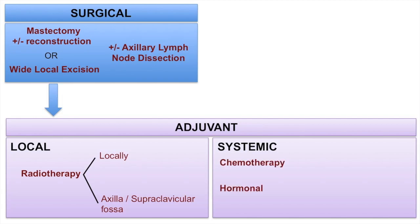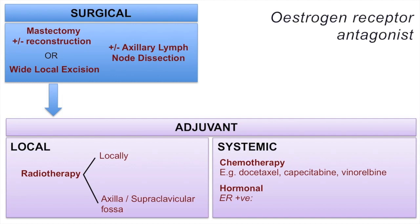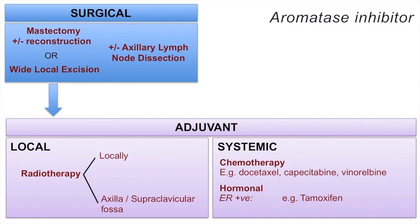Systemically, there are hormonal and chemotherapy treatments. Examples of chemotherapeutic agents include docetaxel, capecitabine, and vinorelbine. Hormonal therapy depends on the receptor status of the cancer. Oestrogen receptor-positive patients may benefit from blocking activation of this receptor, which may otherwise contribute to progression of the cancer. We can try to block this receptor by giving an antagonist such as tamoxifen, or we could reduce serum levels of oestrogen by giving an aromatase inhibitor such as anastrozole or letrozole. This works by reducing the conversion of steroids to oestrogen by the aromatase enzyme.